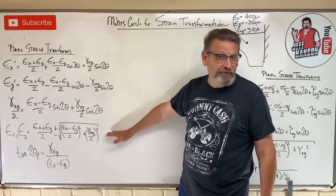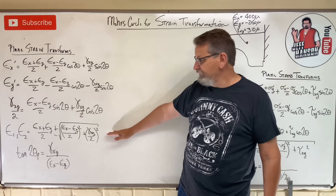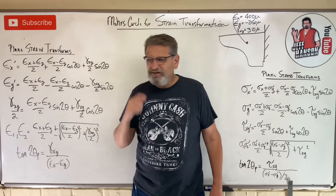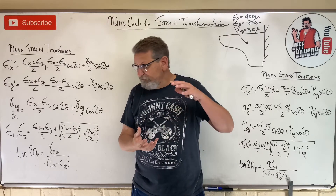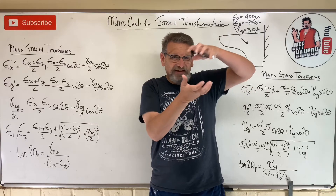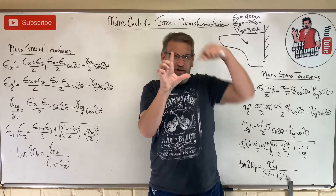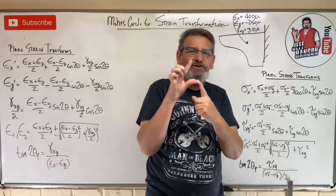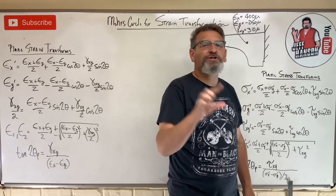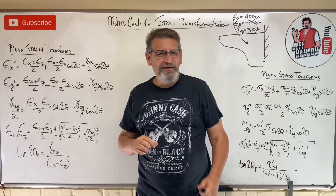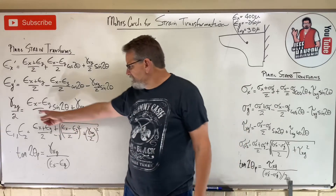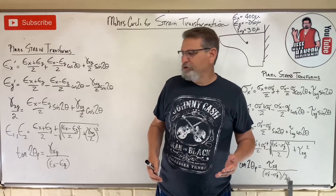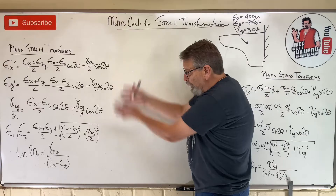We use strain transformation equations to find things like the principal strains — those maximum strains — or maybe the maximum shear strain. Shear strain is when something at 90 degrees changes angles when you put a load on it. That change in angle is shear strain. My students call it 'dead fish.'